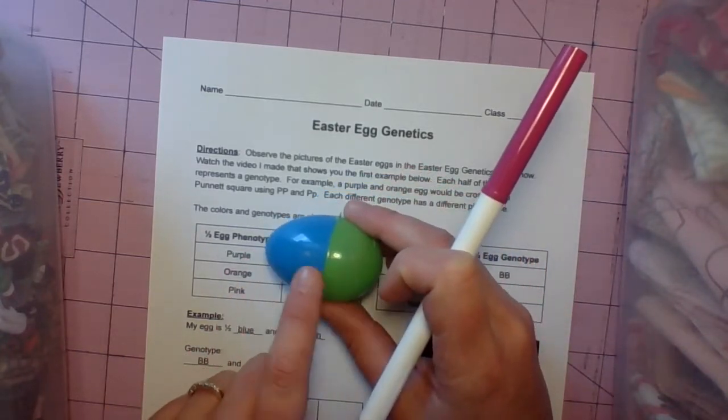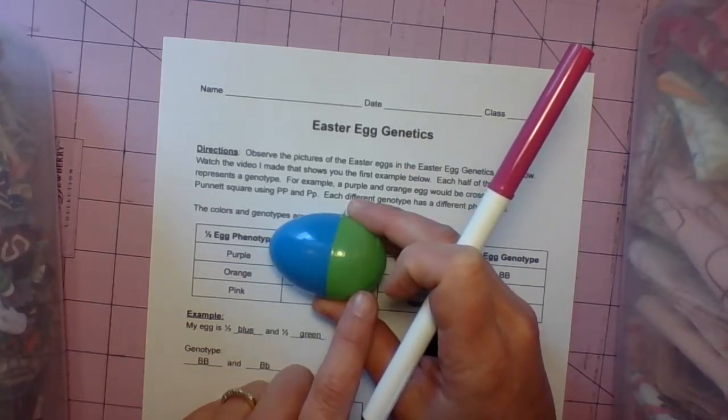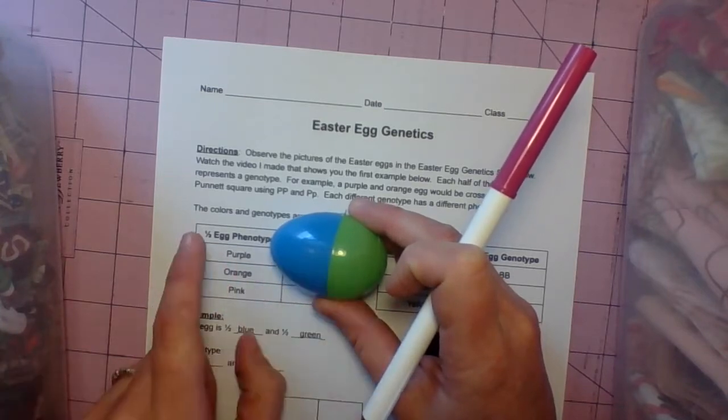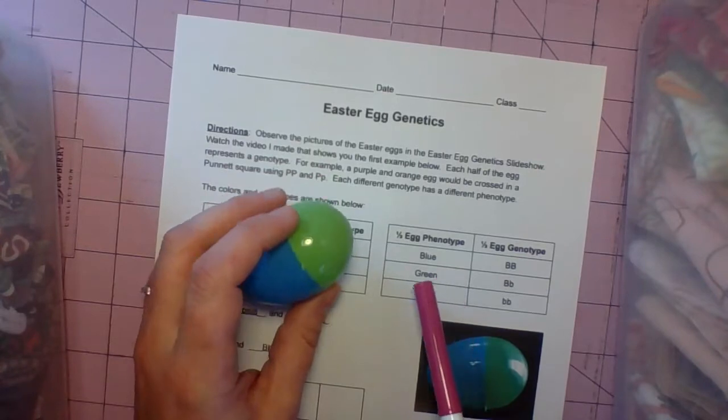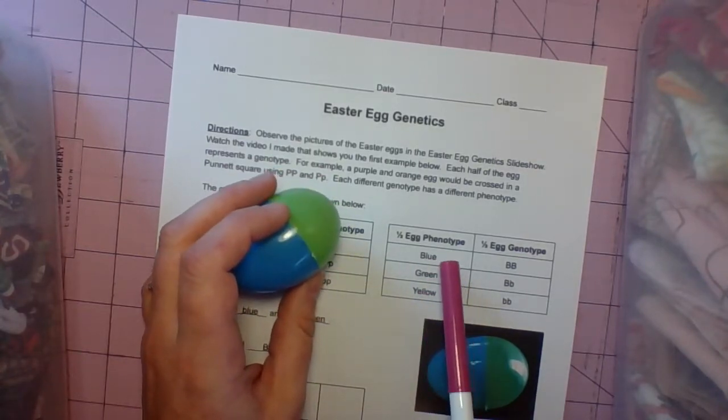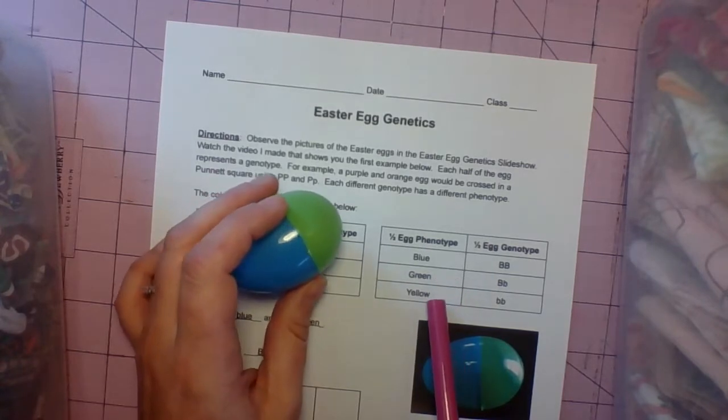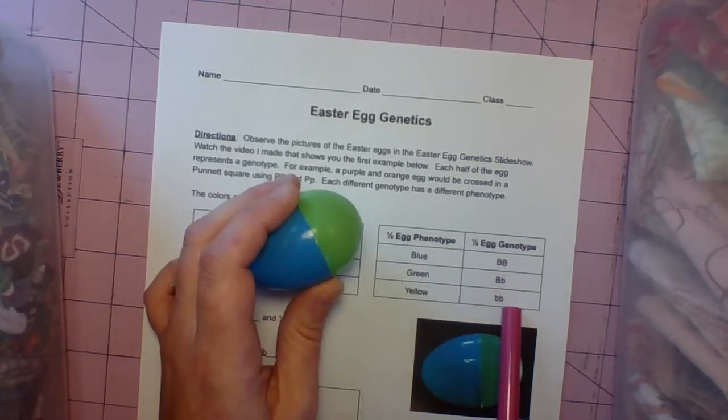This is our practice one together. We're doing this example together. Neither half is purple, orange, or pink. So I go to this data chart. Now we see the three different phenotypes of blue, green, and yellow. For each phenotype, the physical appearance, the color of the egg, the genotype is given.